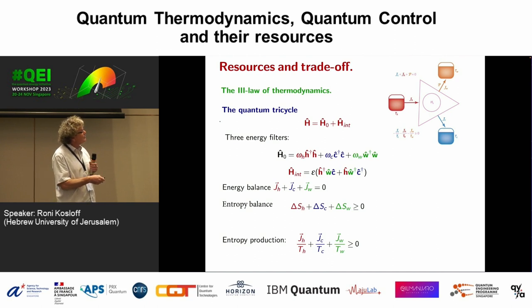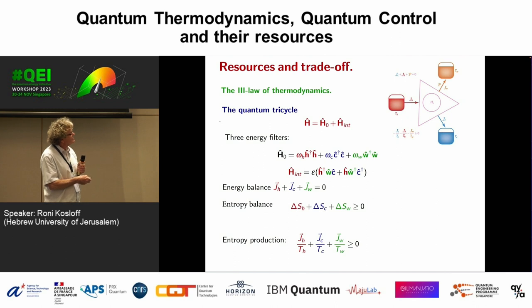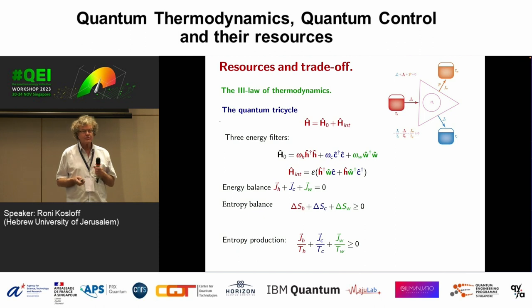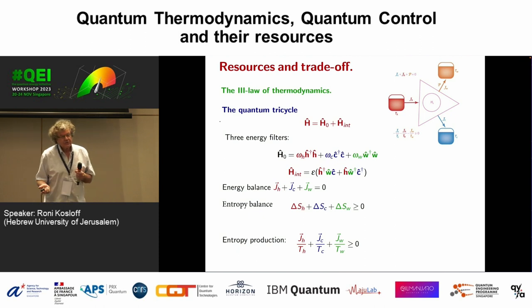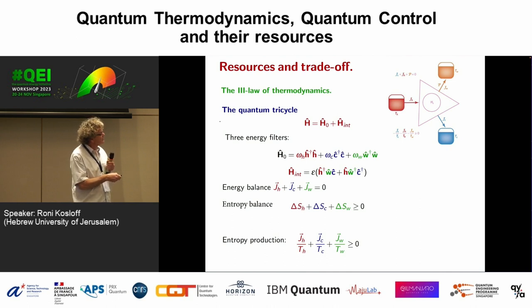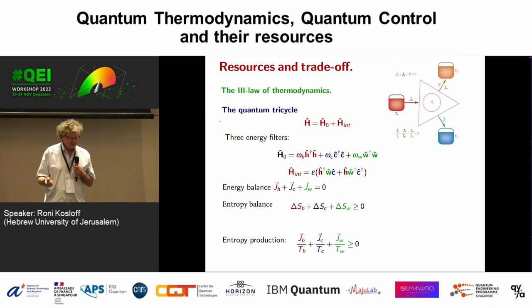We have three baths and a device in the middle, requiring three energy filters: a hot frequency, cold frequency, and working frequency. For optimal resonance, the cold and work frequencies should add up to the hot frequency. For this device to work, we need a non-linear interaction. I take a quantum from the cold bath, a quantum from the working source, and dump it into the hot source — that's why you need a non-linear interaction.